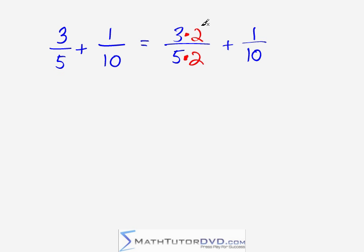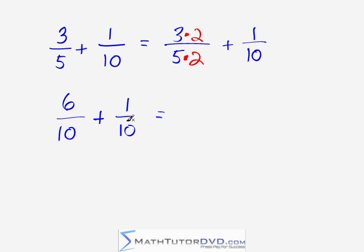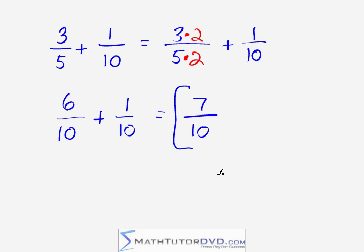I've got one-tenth over here, so I do the multiplication. Three times two gives me six, and five times two gives me ten. I'm adding one-tenth, and now I have a denominator of ten and a denominator of ten, so I can add these fractions. The denominator stays the same — you do not add the denominator. Six plus one gives us seven, so the answer is seven-tenths. You should always double-check by simplifying your answer. Seven-tenths is fully simplified, so there's nothing further to do.